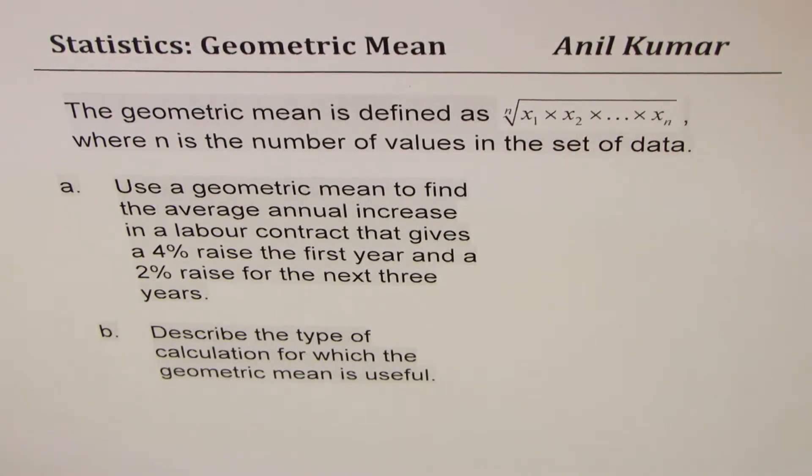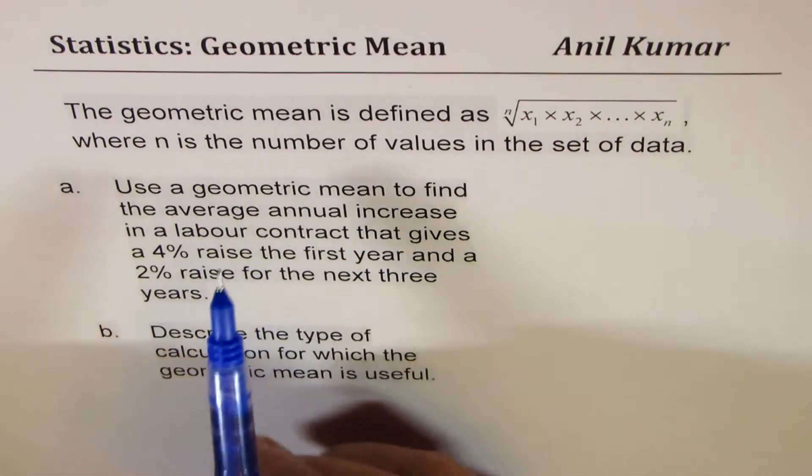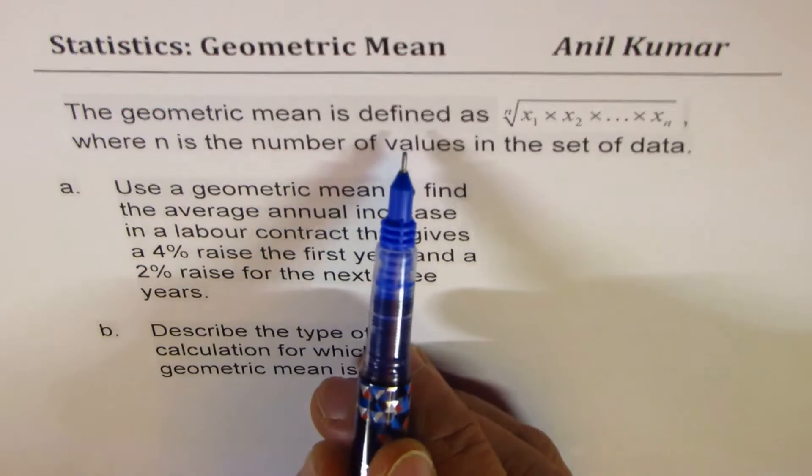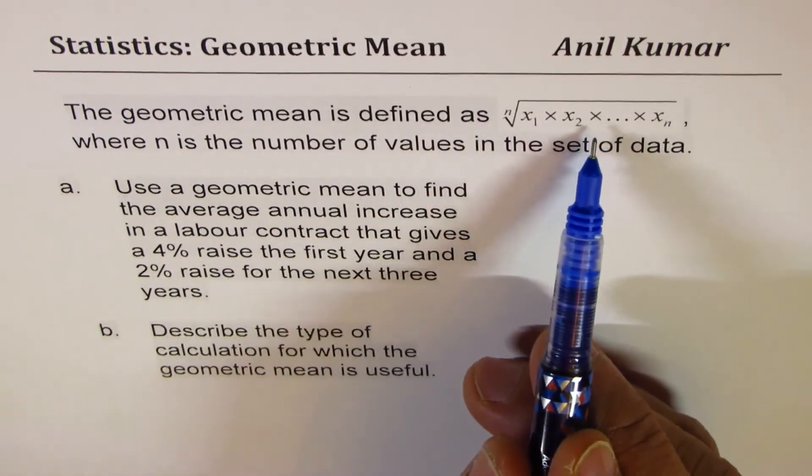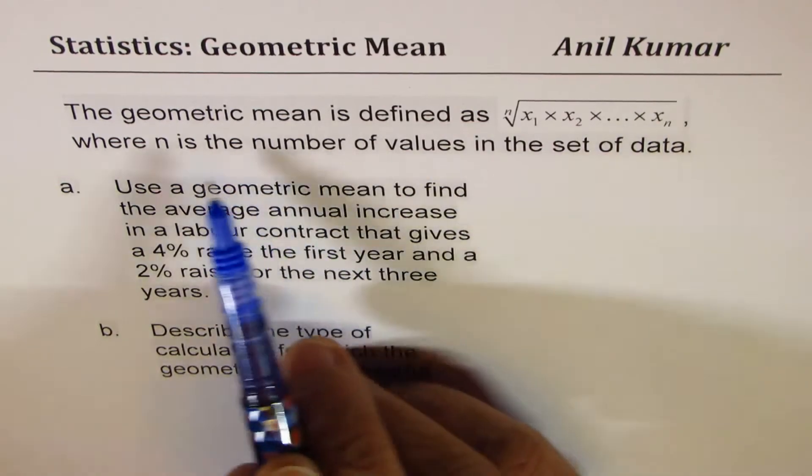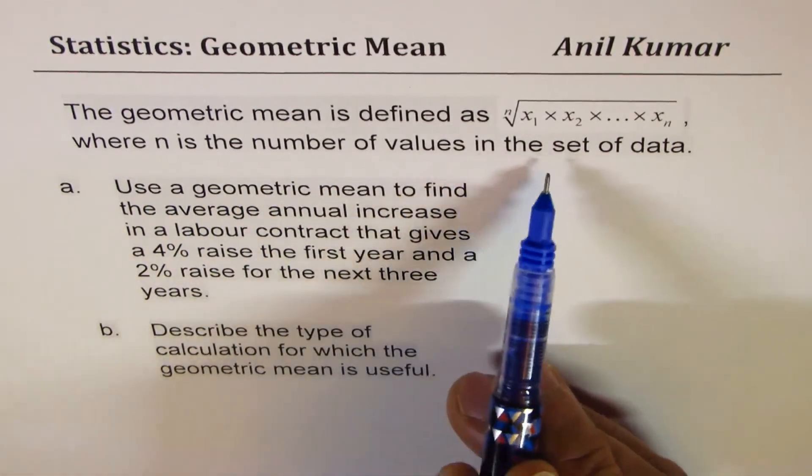In one of the videos we have discussed harmonic mean. The question here is, the geometric mean is defined as nth root of x1 times x2 times so on till xn, where n is the number of values in the set of data.